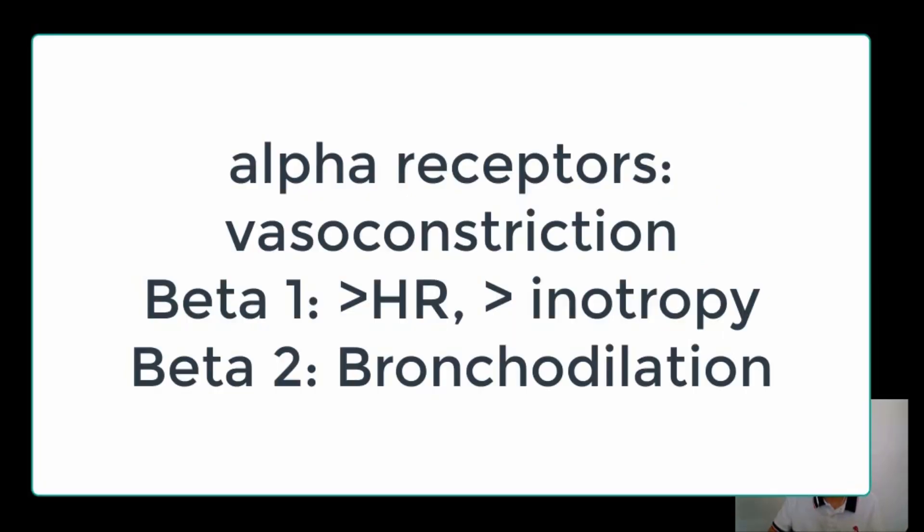In summary, the net effects of alpha receptor stimulation are vasoconstriction. Beta 1 stimulation results in an increase in heart rate and an increase in the force of cardiac contraction. Beta 2 effects cause bronchodilation. This concludes our discussion on the cardiac innervation of the nervous system.